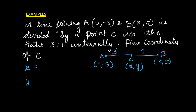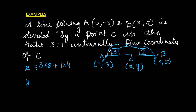For x: the antecedent — the first part of the ratio — is multiplied to the x-coordinate on the opposite side, so 3 into 8, plus the second part of the ratio multiplied to this x-coordinate, so 1 into 4, divided by the sum of the ratios which is 3 plus 1. This gives 24 plus 4 = 28, divided by 4, which is 7.